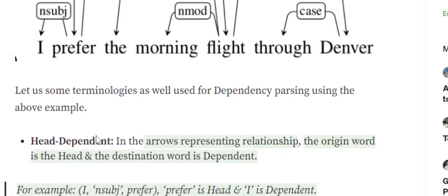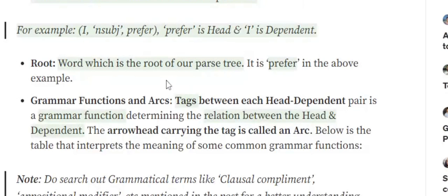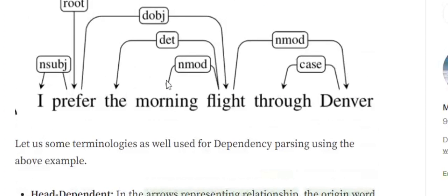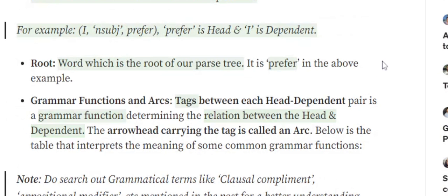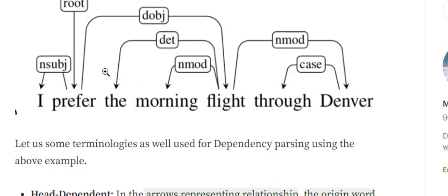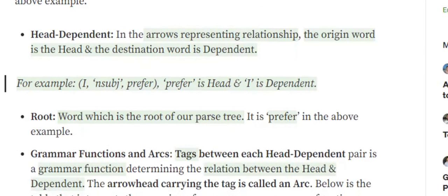In the diagram, the arrows represent relationships. The word of origin is called the head, and the word the arrow points to is the dependent. For example, in 'I prefer', 'prefer' is the head and 'I' is the dependent. The root word is the root of the parsing tree — just like in syntactic parsing — from which the entire tree starts. The arrows and their tags are called grammatical functions or arcs.